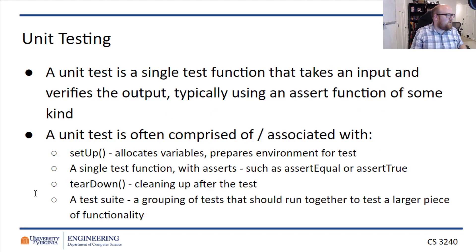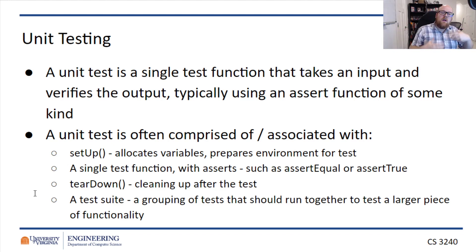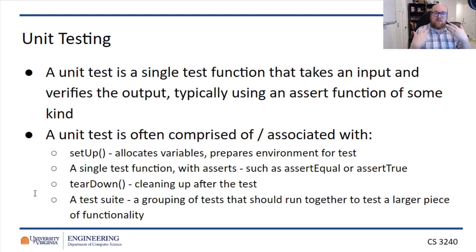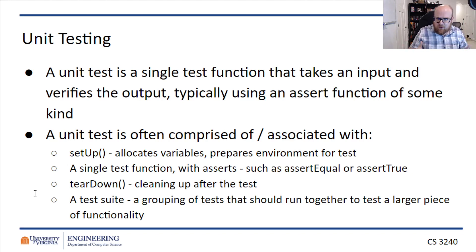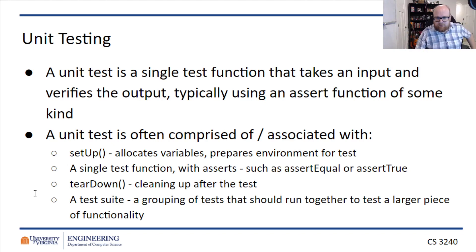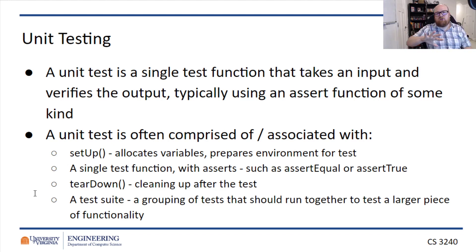We're going to spend the bulk of the next bit talking about unit testing. Unit testing is testing a single function that takes an input — not just an argument but also the system state — and verifies the output, not just what gets returned but also the resulting system state. It's typically verified using assert functions. You can do things like assert true or assert equals on different fields. If all assertions hold up, the test passes. If any single assertion fails — you assert something is true and it's false — the test fails.